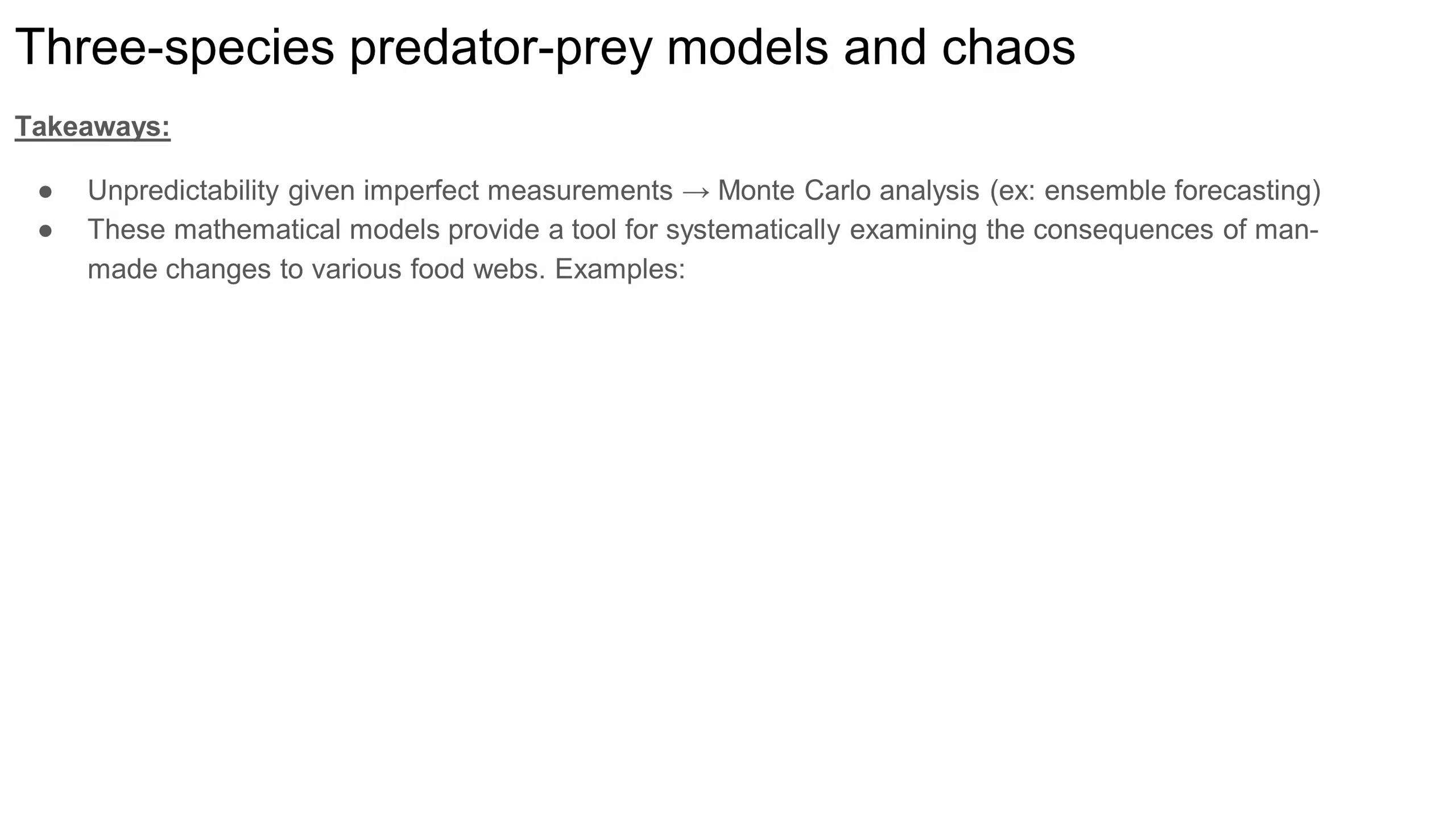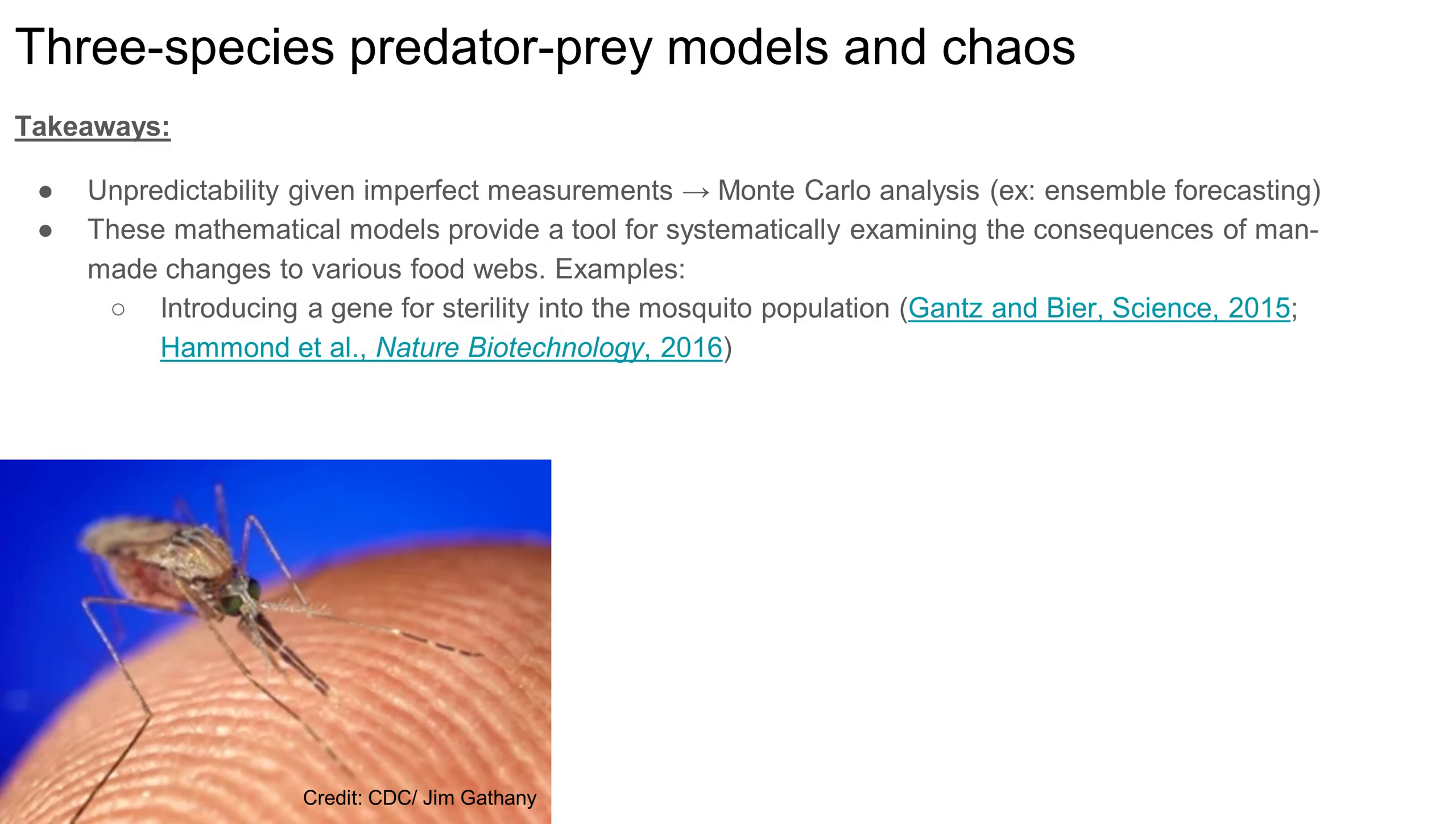Here are a couple examples where modeling and simulation could help. Recently, there has been interest in using CRISPR to introduce a gene for sterility into mosquito populations in an attempt to fight mosquito-borne diseases like malaria, Zika, and dengue fever. From a public health perspective, this might seem promising, but there are additional ecological considerations, one of which is that mosquitoes are pollinators for a variety of plants, and plants are the foundation of most food webs, so inducing sterility in certain mosquito populations could have long-term ecological repercussions.